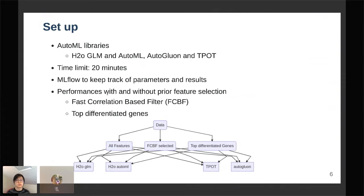I want to set the time limit to only 20 minutes for this algorithm to optimize and I'm using MLflow developed at Databricks for keeping track of the parameters and results. I'm also going to look at whether feature selection can help, so I'm using the fast correlation-based filter feature selection which looks for features that have high correlation with the target but little correlation with each other.